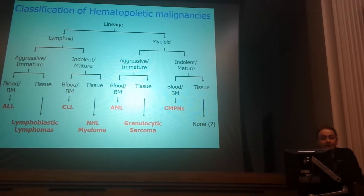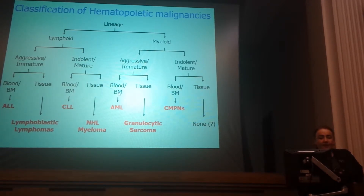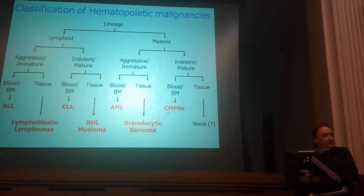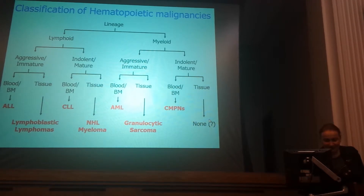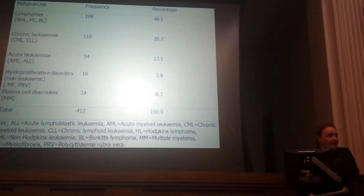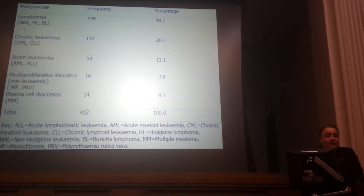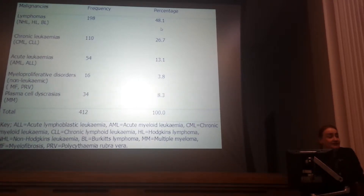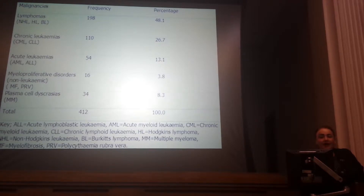Multiple myeloma and some chronic conditions are quite difficult to treat. The myeloid aggressive immature category gives acute myeloid leukemia in blood and bone marrow, and granulocytic sarcoma in tissue. There are also different proliferative disorders in blood and bone marrow. Interestingly, myeloid disease doesn't give us a tissue-related lymphoma condition — that's fortunately an empty space. Regarding frequency, lymphomas — non-Hodgkin and Hodgkin — account for up to 50% of cases. Chronic leukemias, myeloid and CLL, are about 30%. Some of the lymphomas and chronic conditions are more frequent compared to acute conditions.